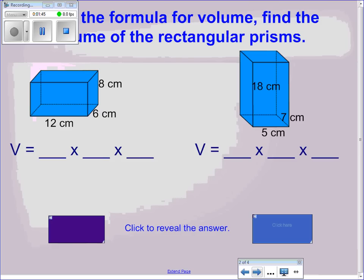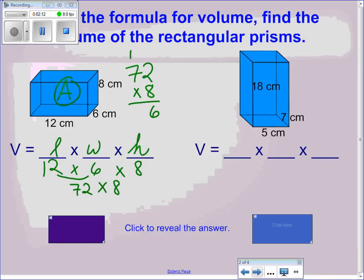Two examples that we can do together, the first one called prism A. Remember volume equals length times width times height. So our volume equals 12 centimeters times 6 centimeters times 8 centimeters. 12 times 6 is 72. We multiply by our height of 8. 72 times 8 is 576. So our volume is 576 centimeters cubed or cubic centimeters. Let's see if we're correct. And we are.